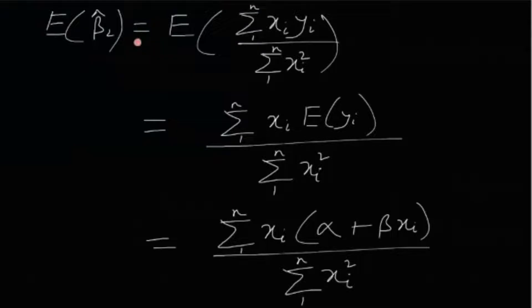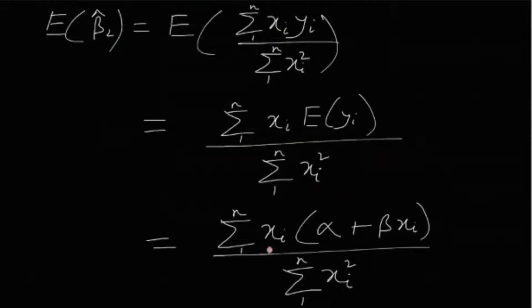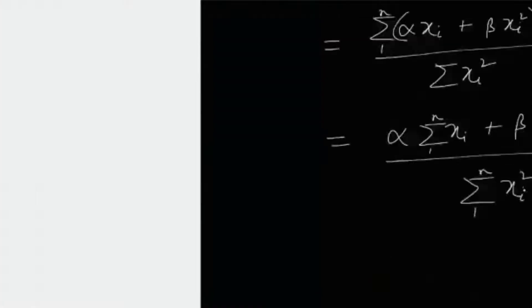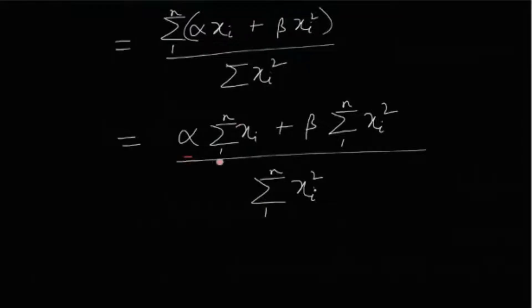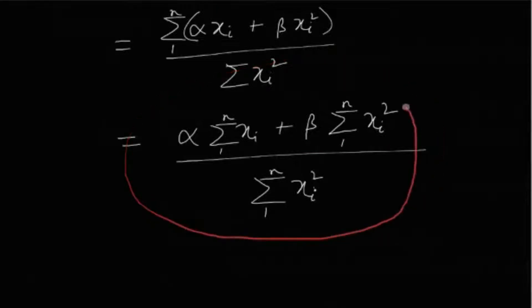Similarly, E[β̂₂] = Σxᵢyᵢ / Σxᵢ². Since xᵢ are constant, this equals Σxᵢ·E[yᵢ] / Σxᵢ² = Σxᵢ(α + βxᵢ) / Σxᵢ² = (α·Σxᵢ + β·Σxᵢ²) / Σxᵢ². This is the expectation of β̂₂.